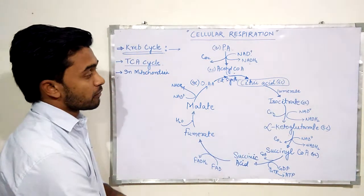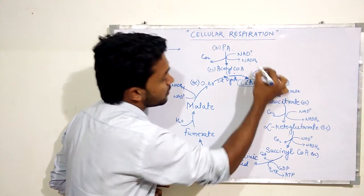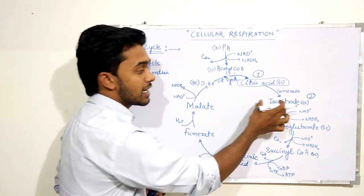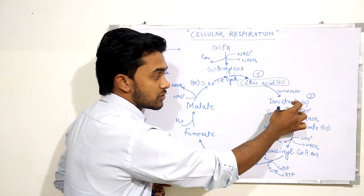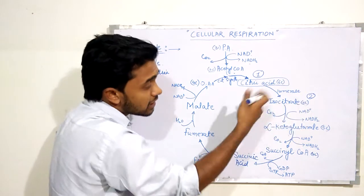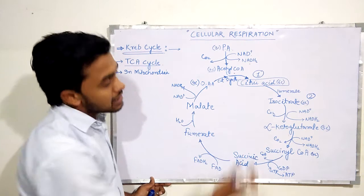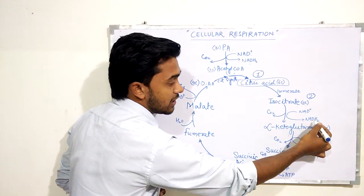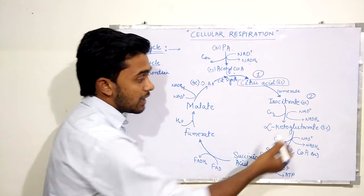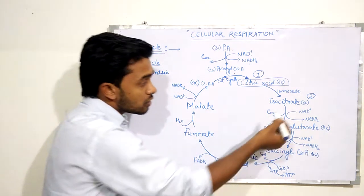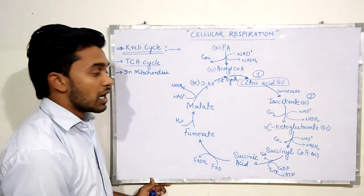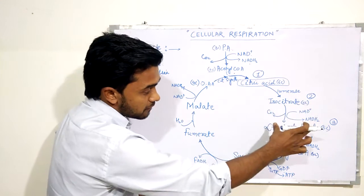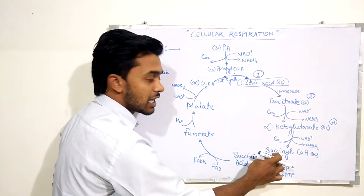Citric acid is then converted to isocitrate. Isocitrate is an isomer of citric acid, and the enzyme used is isomerase — this is step one and step two. Isocitrate, a six-carbon compound, is then converted to alpha ketoglutarate in step three. This is again a redox reaction and the compound reduced is NAD into NADH2.